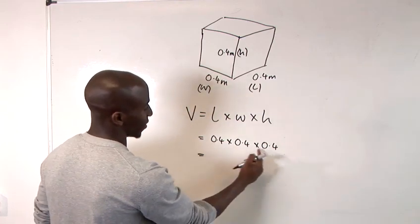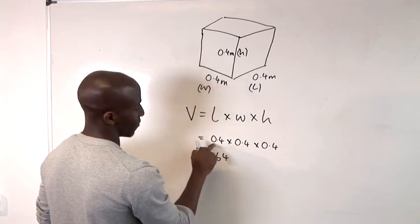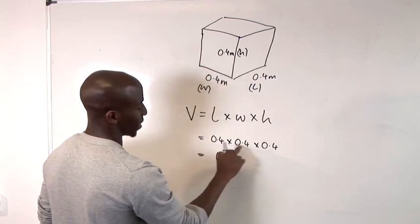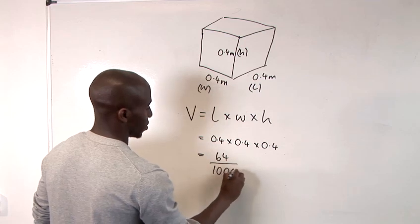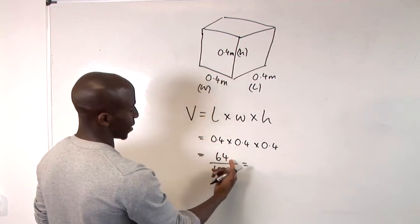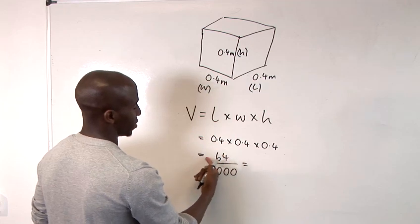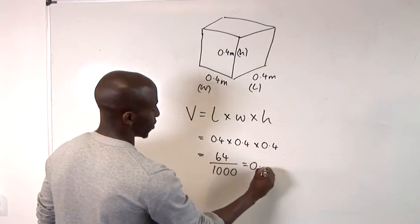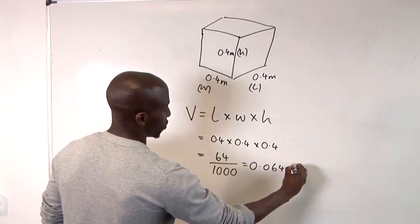All we have to do is just divide that by a thousand because we have three divisions by ten here. And that means that we take the decimal point over three times. So we are going to need 0.064 metres cubed.